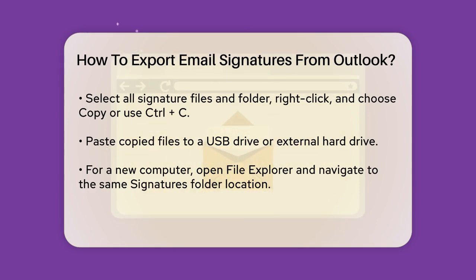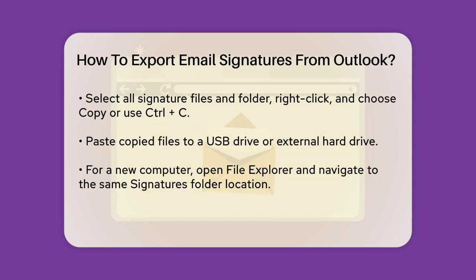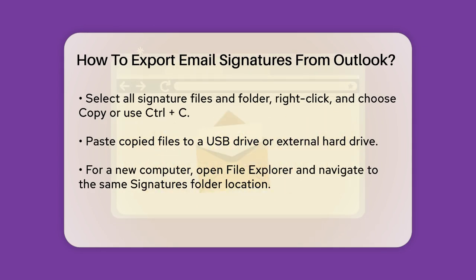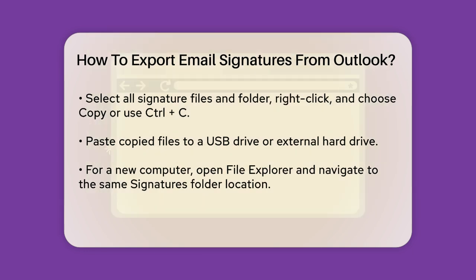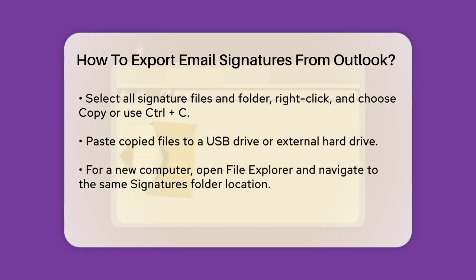To export your signature, select these three files and the folder, right-click, and choose Copy or use the Ctrl+C keyboard shortcut. You can then paste these files to any media you prefer, such as a USB drive or an external hard drive.